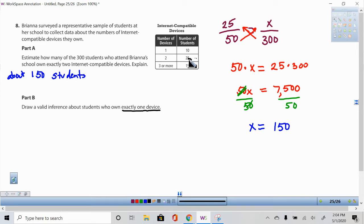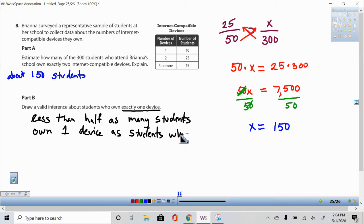That means the same thing, just different ways of saying it. So I can say less than half as many students own one device as students who own two devices. And that's a valid inference. The number of students that own one device is around half the students that own two devices.